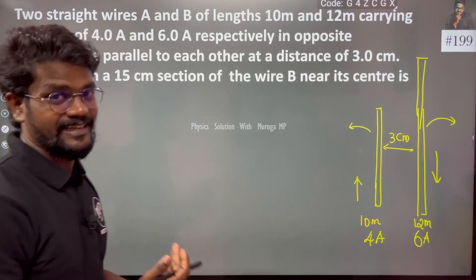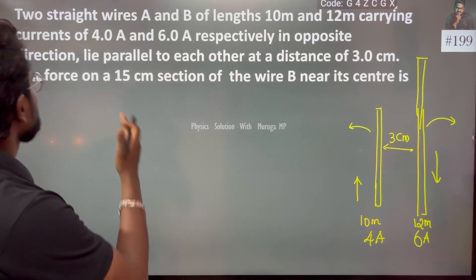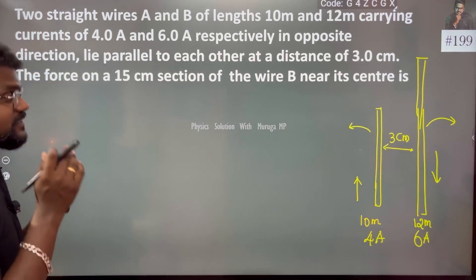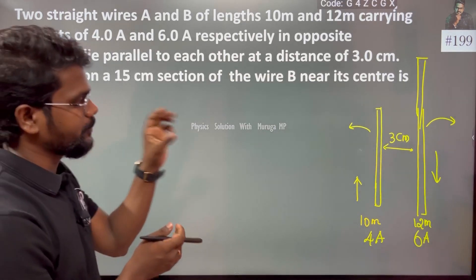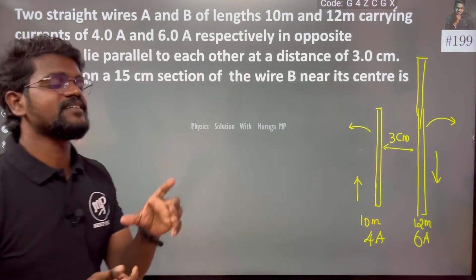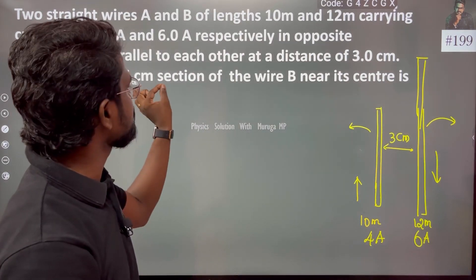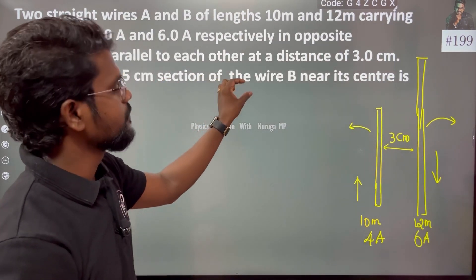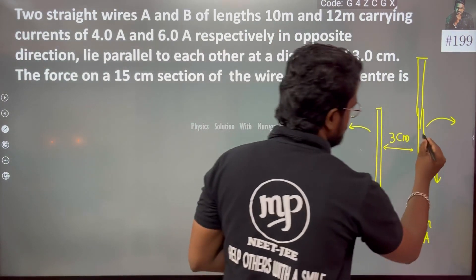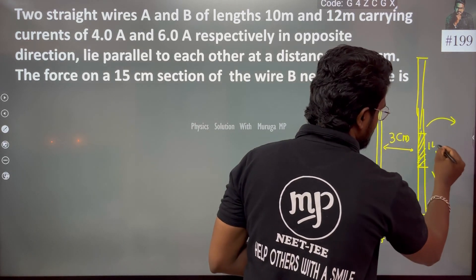We need to find the force on the 15cm section of wire B near its center. So the length in question is 15cm of wire B.